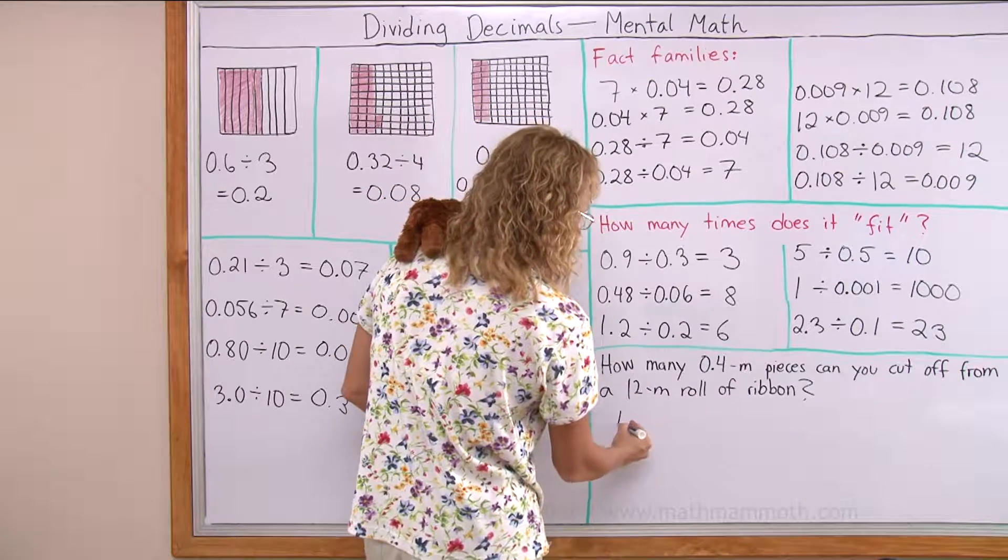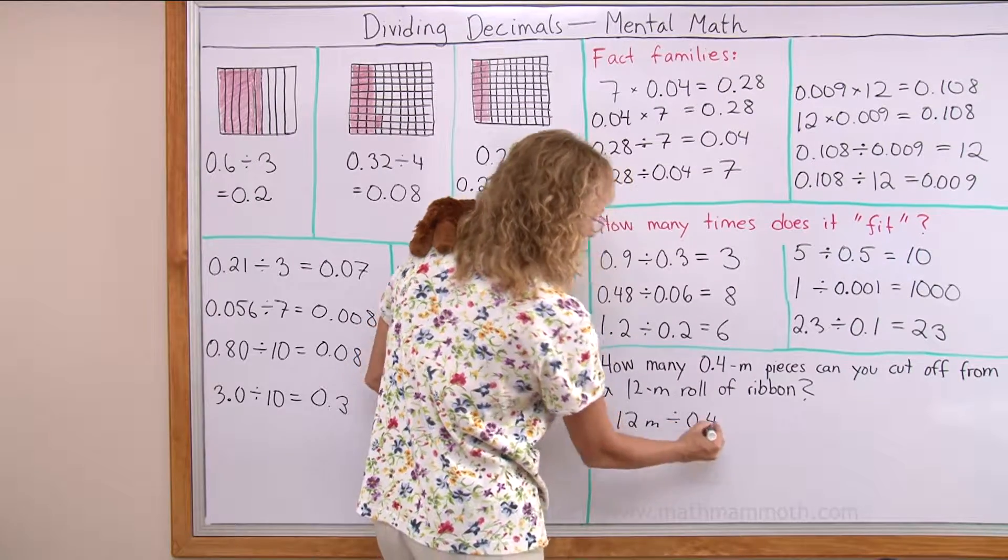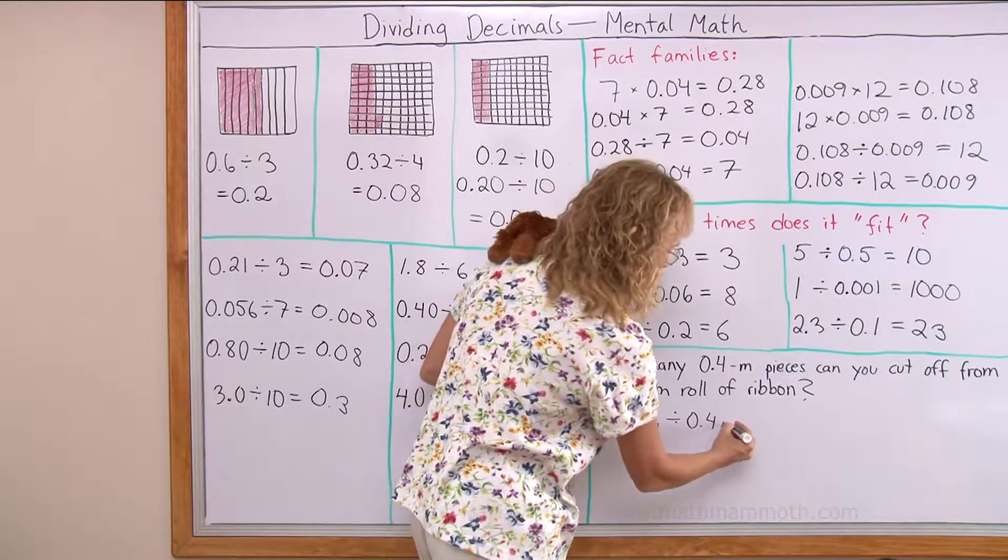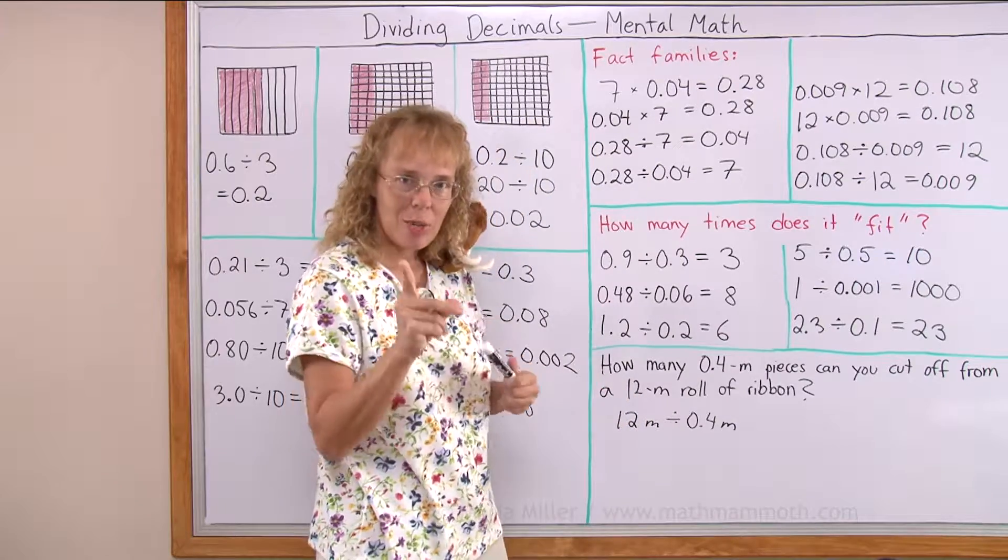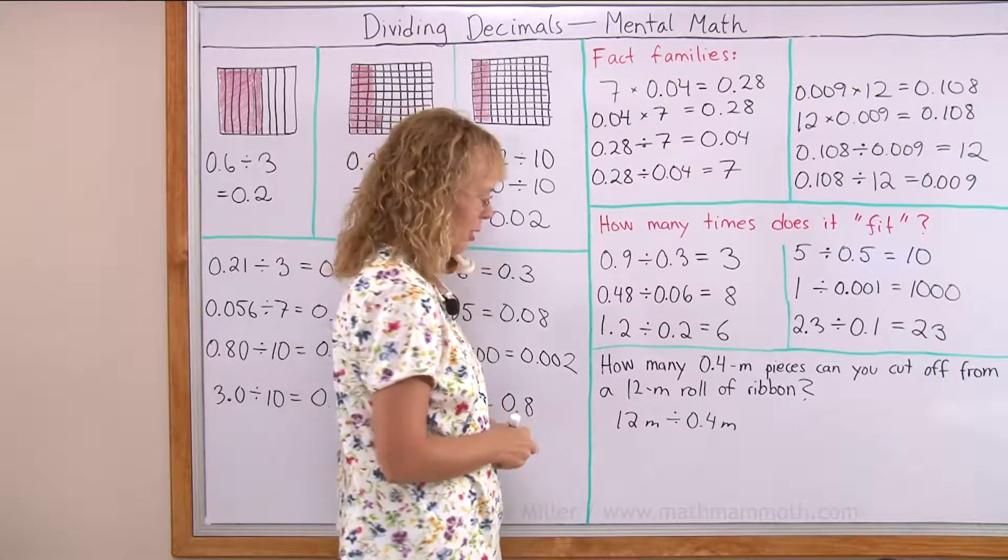So my division would be 12 meters divided by this. It's written this way. Because our question is, how many times does this here fit into 12 meters? Not vice versa. Students might write it the opposite way.